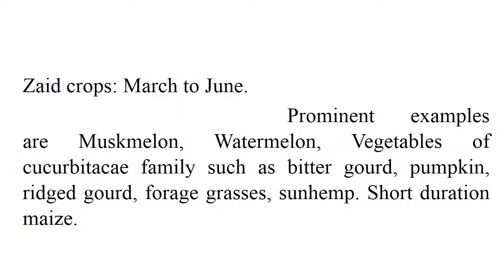Zaid crops are mainly summer crops grown during March to June. Examples include Muskmelon, Watermelon, vegetables of the Cucurbitaceae family like Bittergourd, Pumpkin, Ridgegourd, Forage grasses, Sunn hemp, and short-duration Maize grown for fodder purposes.